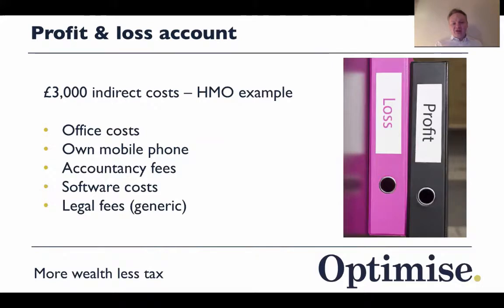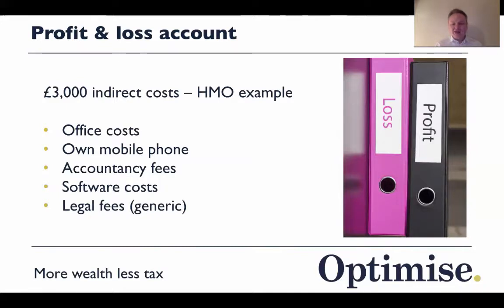Indirect costs could include office costs. If you're running your property business from a hired office, that's not a direct cost — it's not directly associated with renting properties; it's more about running the business generally. Your own mobile phone cost is your cost, not a tenant cost, so it's indirect. Accountancy fees and bookkeeping fees are also indirect costs.